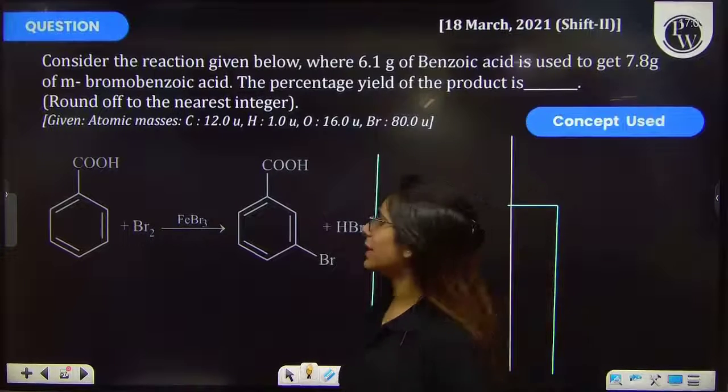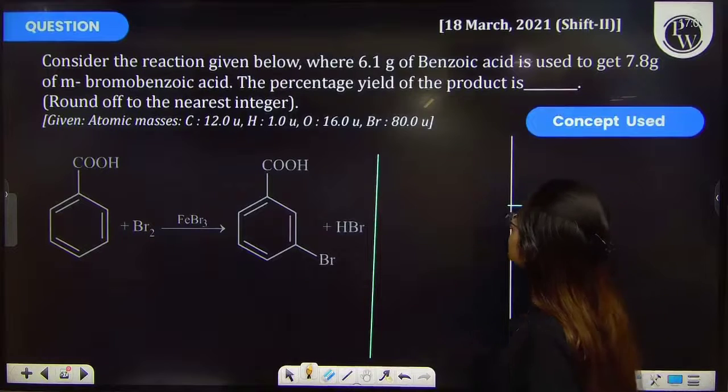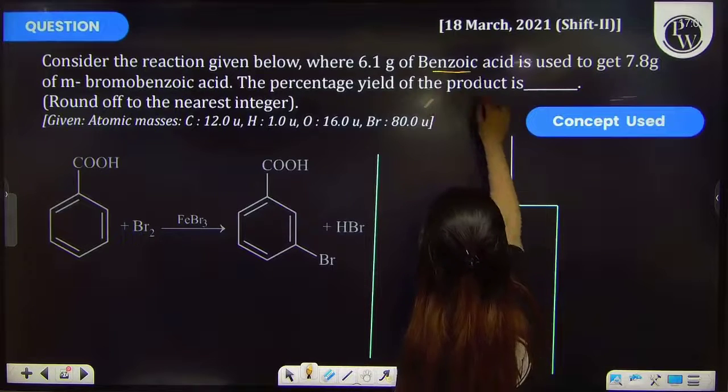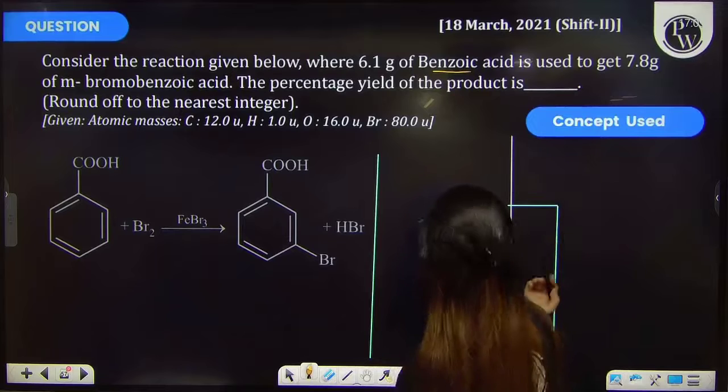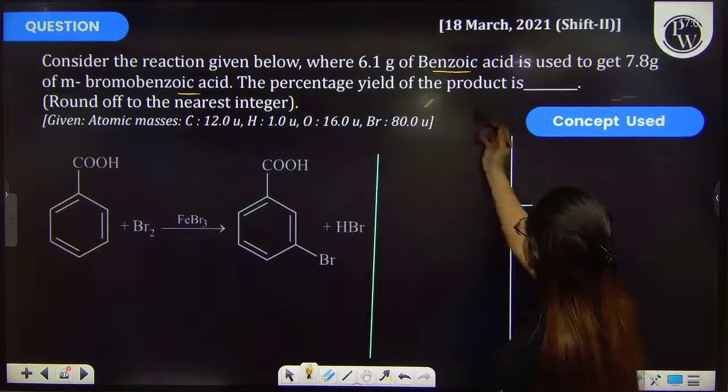Let's see this previous year question. The question says consider the reaction given below where 6.1 g of benzoic acid is used to get 7.8 g of metabromo benzoic acid. The percentage yield of the product is.